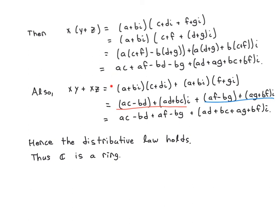Now let's compare the two expressions. In the real part, I see AC in both, plus AF in both, minus BD in both, minus BG in both — so they have the same real part. Looking at the imaginary part: AD is in both, AG is in both, BC is in both, and BF is in both — so they also have the same imaginary part. That means these two expressions are equal. Congratulations, the distributive law holds. We have shown all four axioms, so C is a ring — in fact, it's a commutative ring.